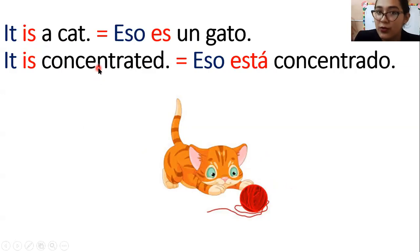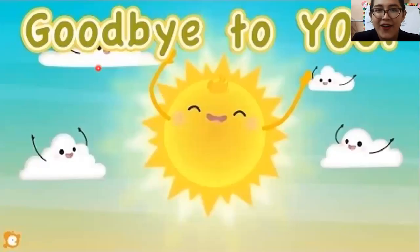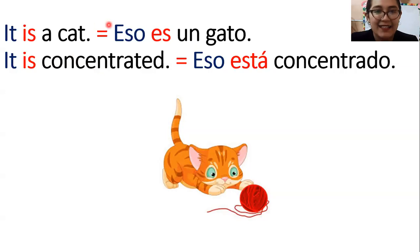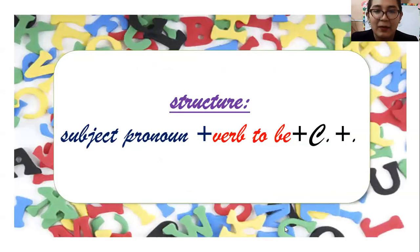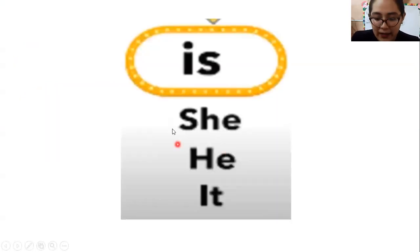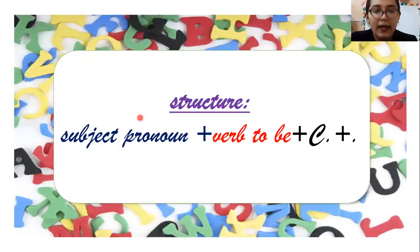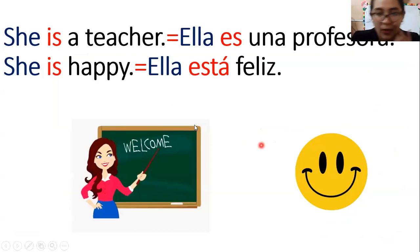Así es como ustedes deben hacer sus oraciones, chicos, guiándose de la estructura y también de los ejemplos. Los tutoriales les van a ayudar mucho porque ahí van a distinguir qué es cada palabra. El día de hoy recuerden que hemos aprendido acerca del verb to be is, y los pronombres que lo acompañan. Y también qué significa ese verb to be, que tiene dos formas: ser y estar. También recuerden la estructura para escribir sus oraciones y los ejemplos para poder guiarse.